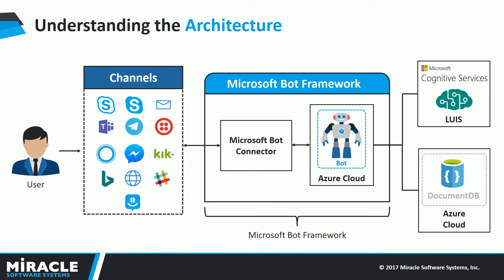Once the bot receives the message, it sends the message to LUIS, an NLP engine which is part of Microsoft's Cognitive Services. LUIS processes the English message and resolves it into an intent and entities. An intent is the intention behind the message, and entities are the data items passed in the message. For example, the message "I want to order a chicken pizza" would be resolved into an intent of "place order" and an entity of "chicken pizza."